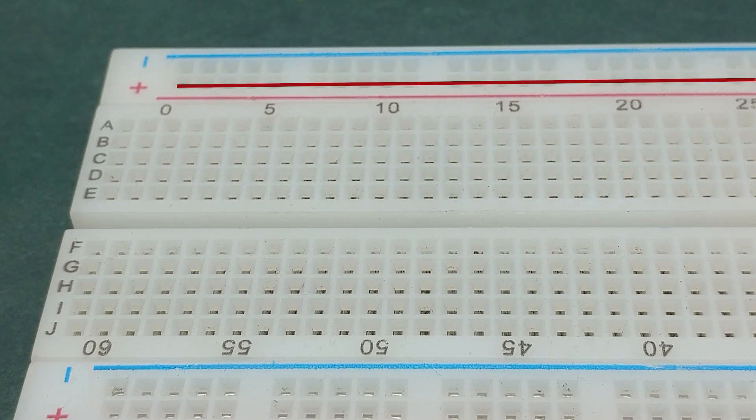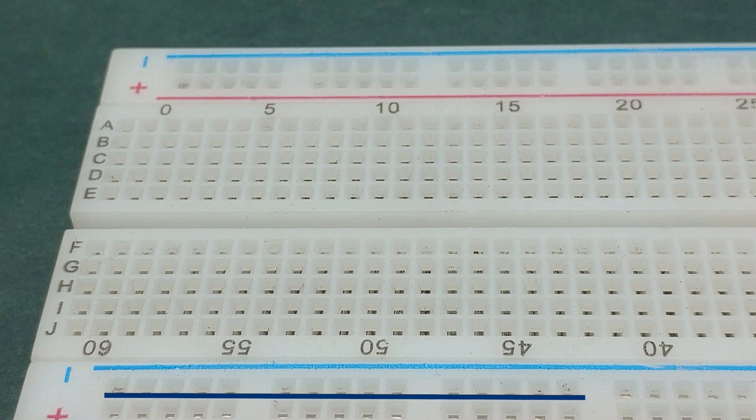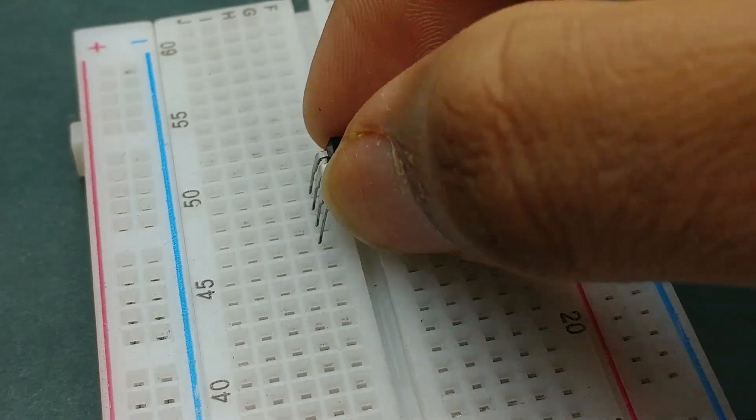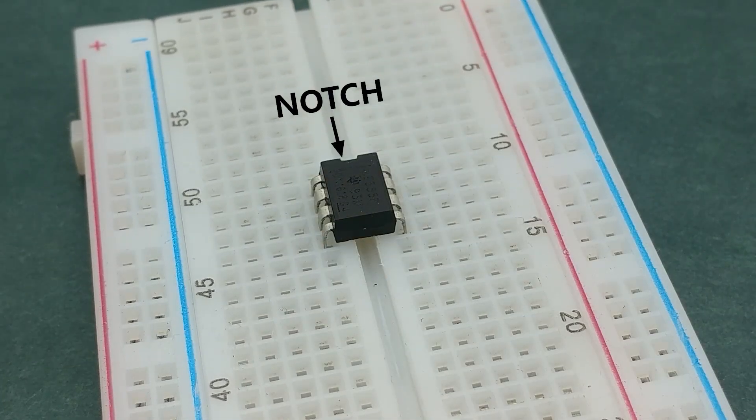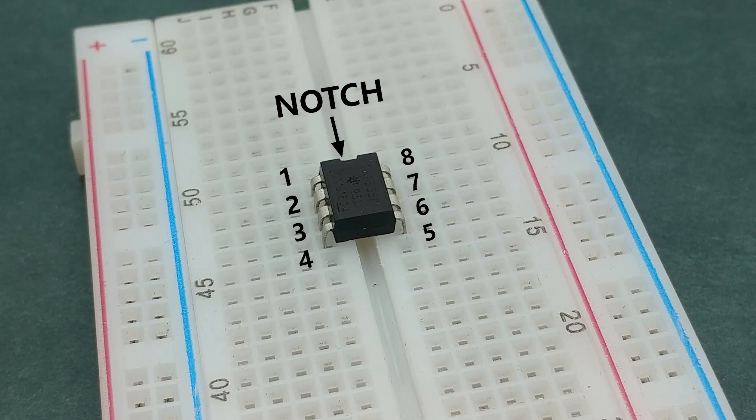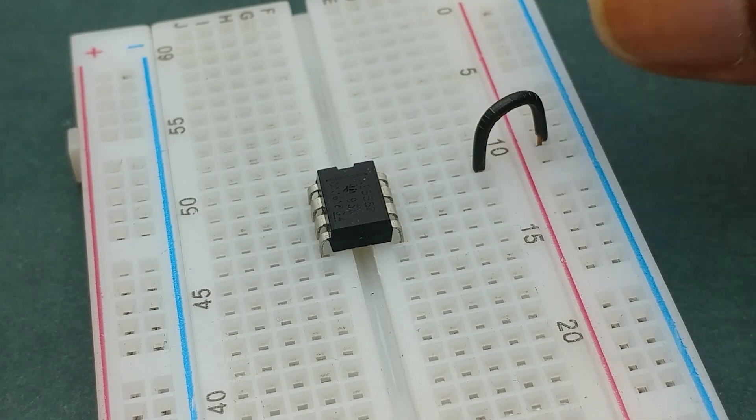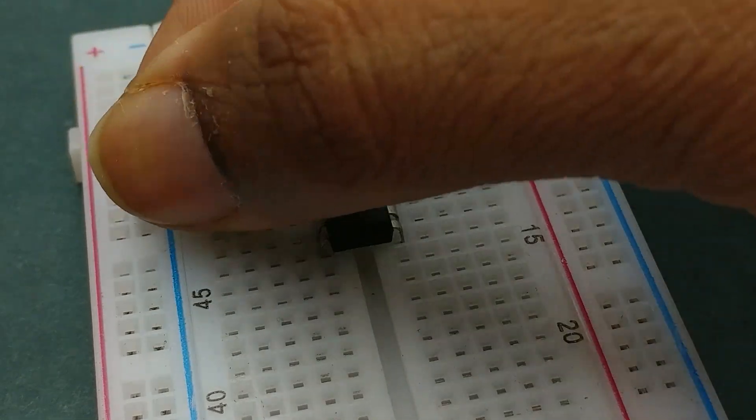I'll be using this row as positive rail and this as negative rail. Place 555 timer IC on the breadboard such that its notch faces up and the pinouts are as shown. Next, connect pin 8 of the IC to positive rail and pin 1 to negative rail.